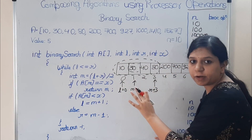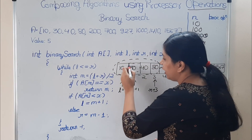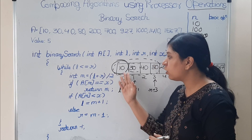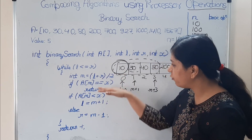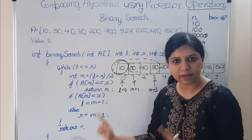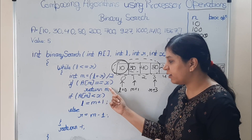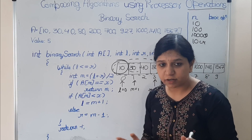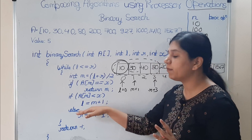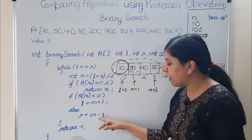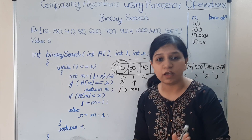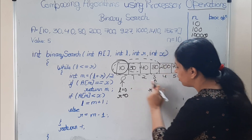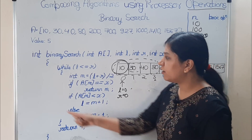If 5 is present, it must be on the left side. Only one element remains in the search space. Programmatically: m = 1, a[m] = 30 is not less than x = 5, so we go to the else branch again: r = m - 1 = 0. Now both l and r are 0, so we enter the loop one more time.